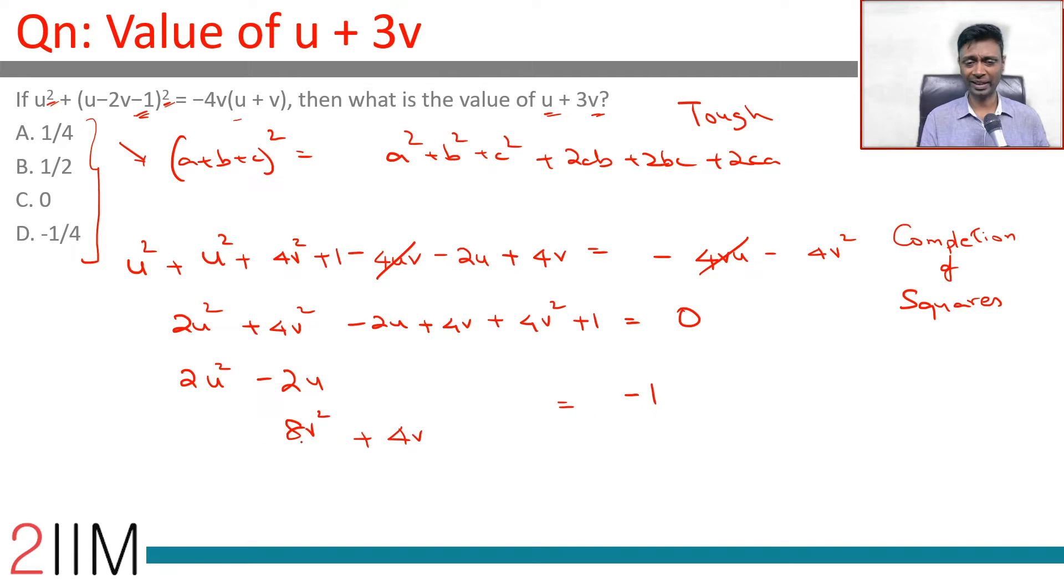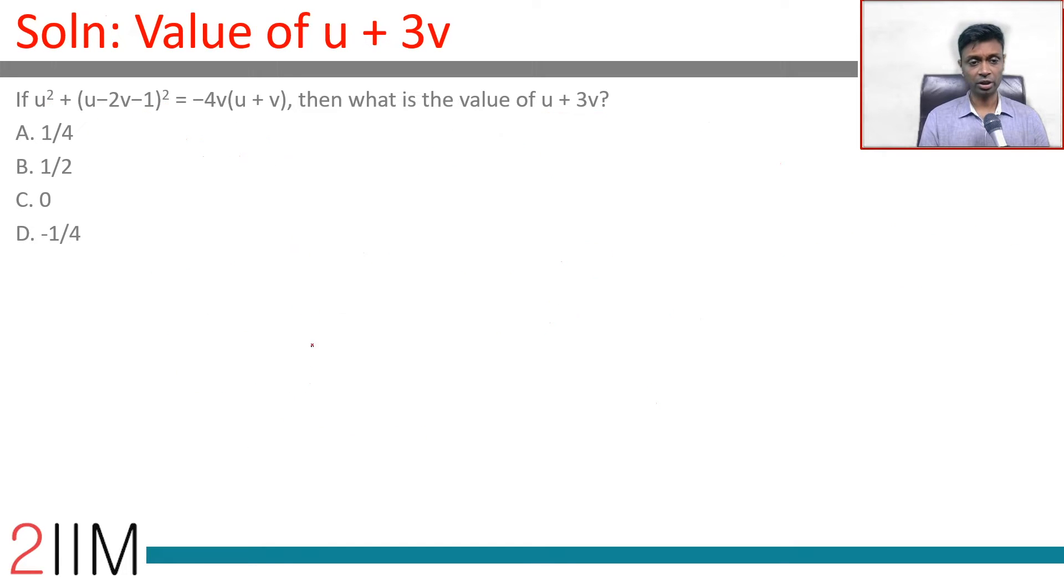8v square is not anything square. 2v the whole square is 4v square. u square is root 2u the whole square. So I am going to take out a 2 from here and a 2 from here and then try to simplify this.